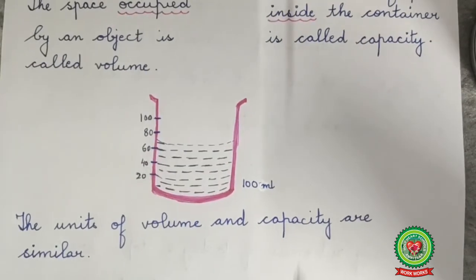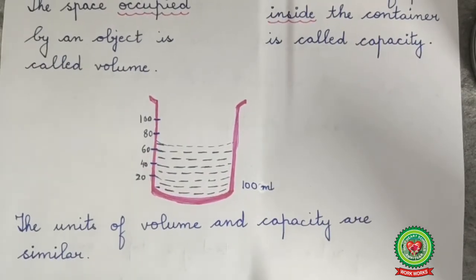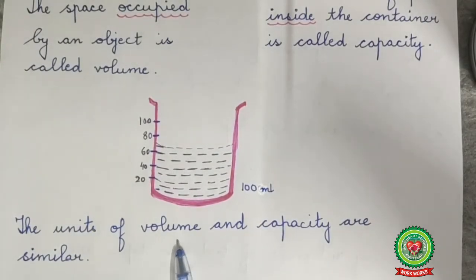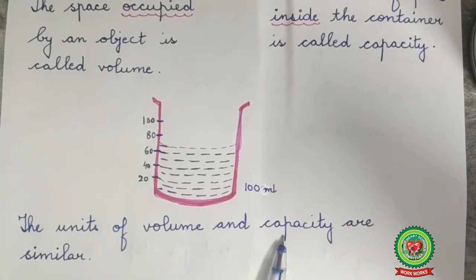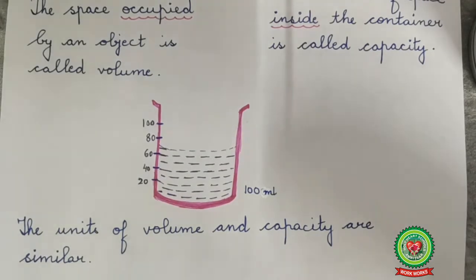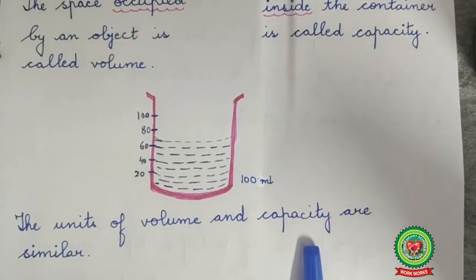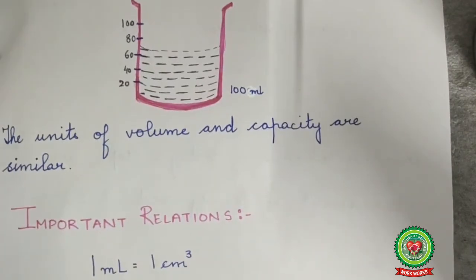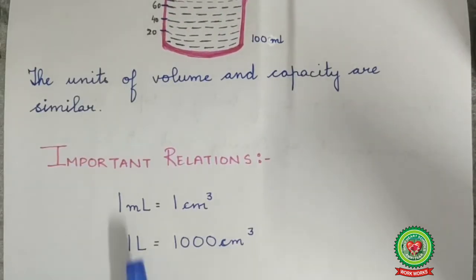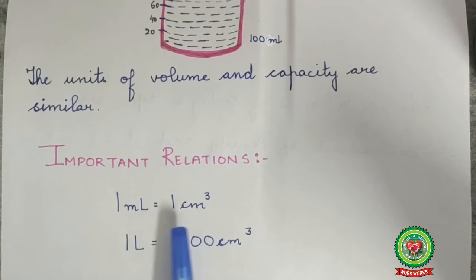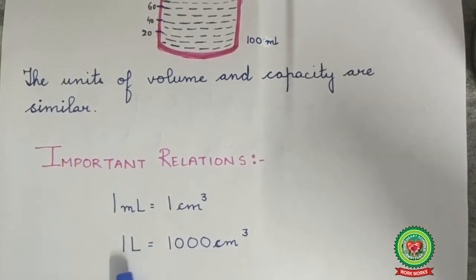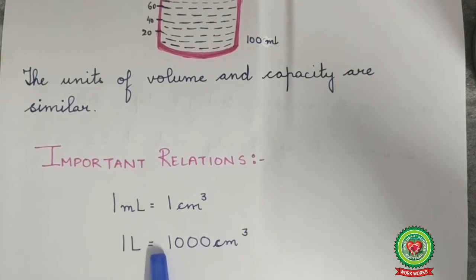The units of volume and capacity are similar. The SI unit of volume is meter cube, and therefore the SI unit of capacity is also meter cube. However, capacity is generally measured in liters. There are important relations: 1 ml equals 1 cm³, and 1 liter equals 1000 cm³.